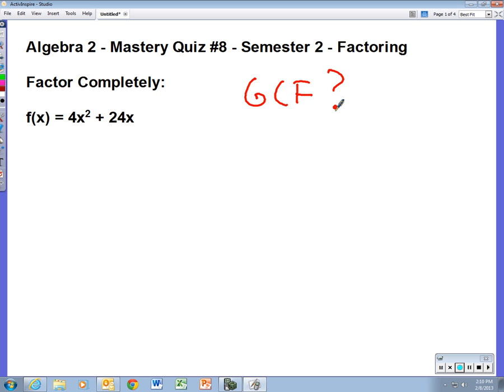We always want the greatest common factor. So start with the 4 and the 24. What is the largest factor, the greatest factor they have in common? Two is a factor, but is it the greatest common factor? No. So what else goes into 4 and 24? Well, hopefully it's obvious—it's 4. So we're going to pull out a 4.